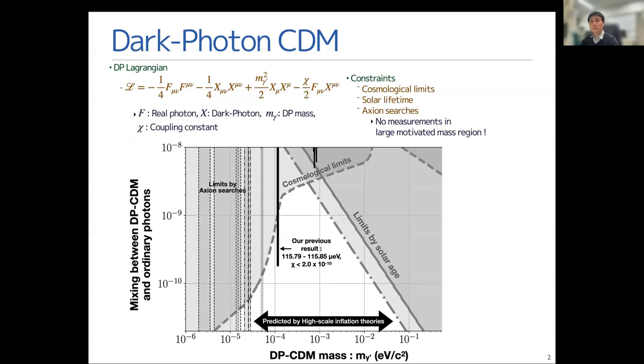I believe everyone joining this conference knows what dark matter is, so I'll skip that and start with the Lagrangian of the dark photon for the electromagnetic part. In this equation, the first term shows the real photon part, and the second term is for the dark photon term. The third term shows the mass term of the dark photon, and the last term is for the interference between them with the coupling constant chi.